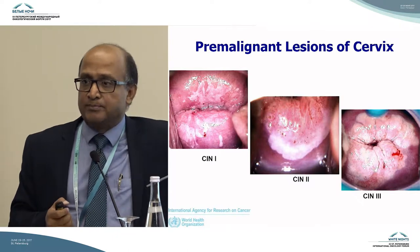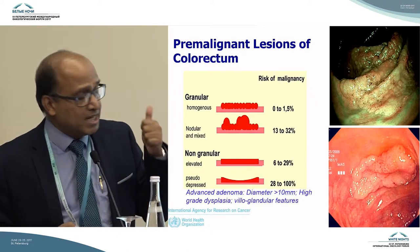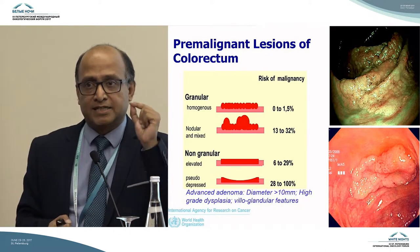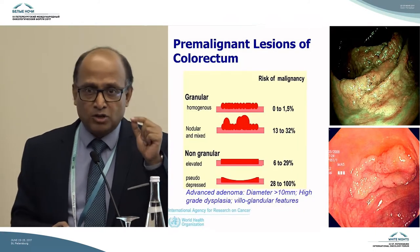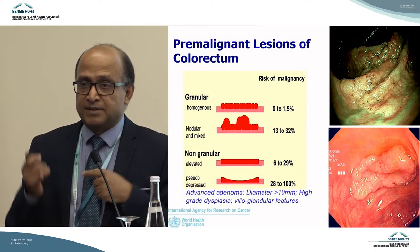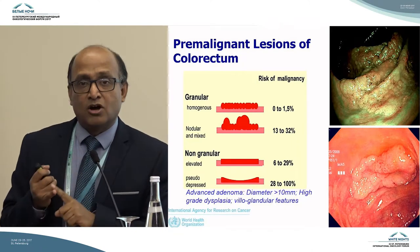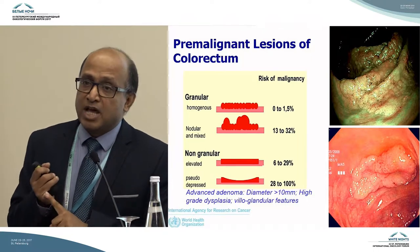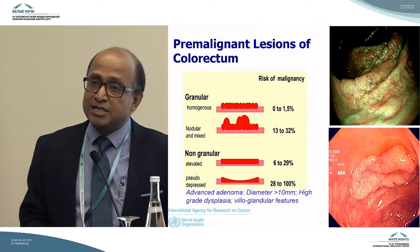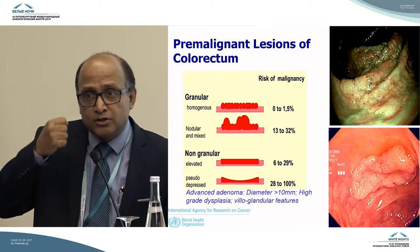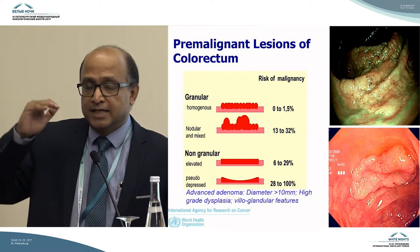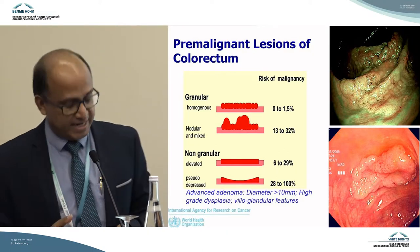Similarly, for colorectal cancer, we know 95% of colorectal cancers originate from adenomas. The particular problem is advanced adenomas — those which are one centimeter or more in diameter, with high-grade dysplastic changes and villous-glandular appearance. These advanced adenomas can be treated even endoscopically if they are removed, and subsequently the chance of developing colorectal cancer is substantially reduced.